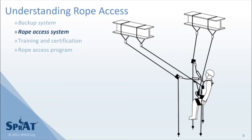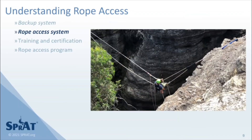Multiple pairs of main and backup systems may be employed to provide for horizontal movement and positioning. These techniques extend a worker's ability to access locations in all directions, all while protecting the worker from both freefall and swingfall should failure of any system or component occur.